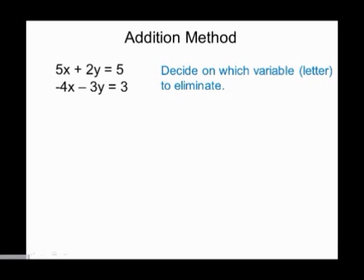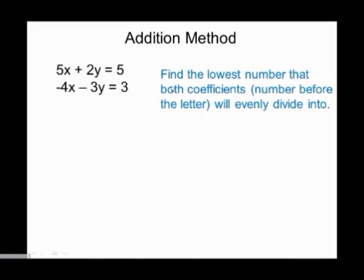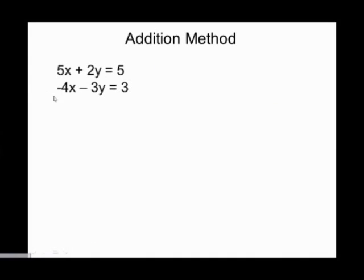It doesn't matter which variable you eliminate — you could eliminate x or y. As you practice, you'll find some cases where one choice means fewer steps, but we won't worry about that now. I'm going to eliminate x. To do that, I need to find the lowest number that both coefficients divide evenly into. The coefficients are 5 and negative 4 — focusing on 5 and 4 — and the lowest common multiple is 20.